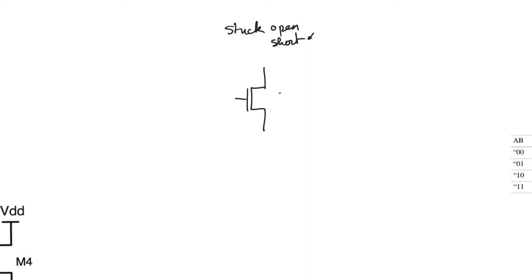If the transistor is stuck open, this doesn't actually mean that there's an open circuit in the finished chip. It could mean that some defect has caused the threshold voltage of the transistor to rise to such an extent that the transistor never turns on. Or there could be an open circuit, or there could be a misalignment that failed to create a proper transistor.